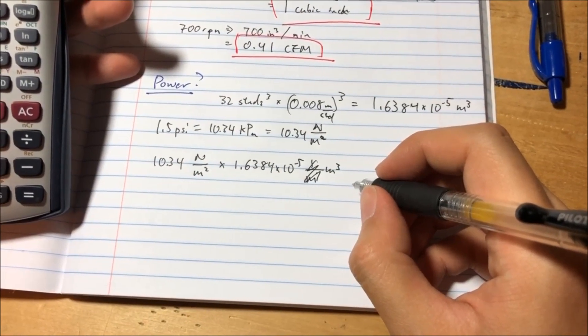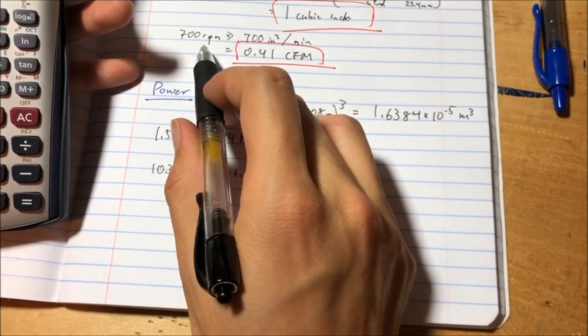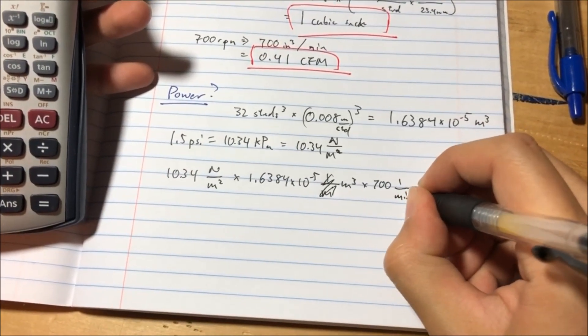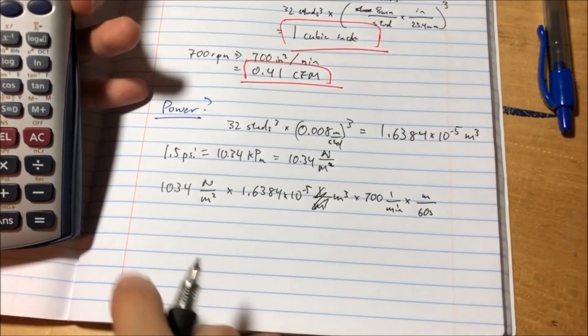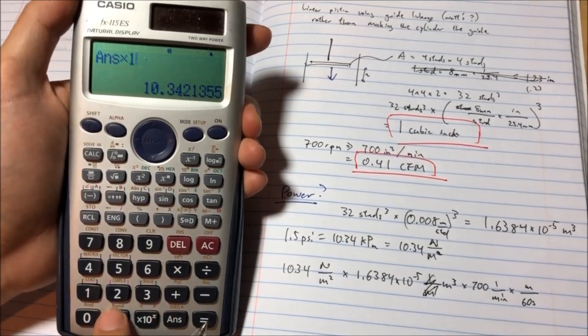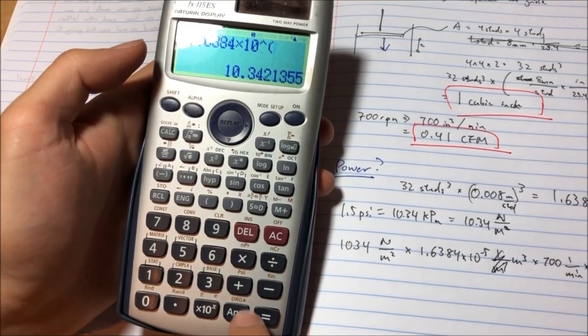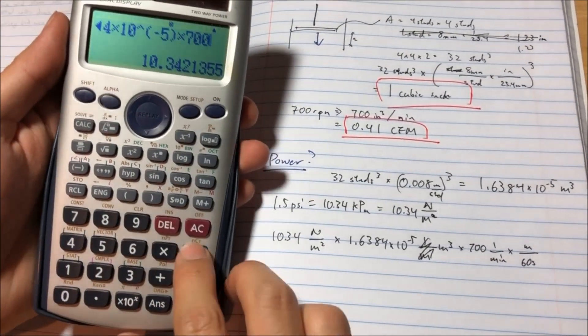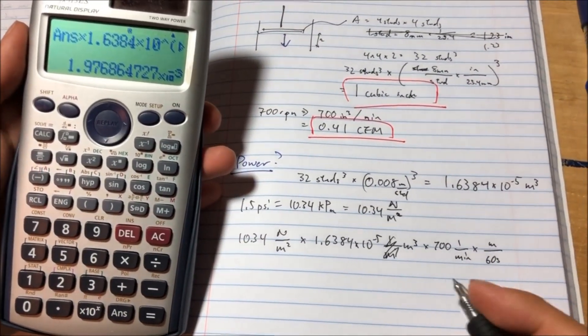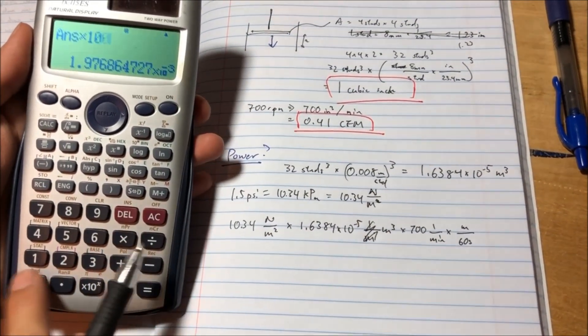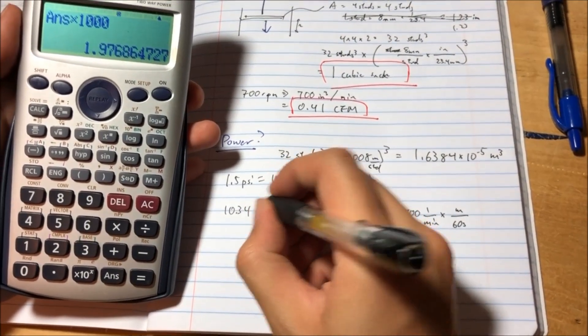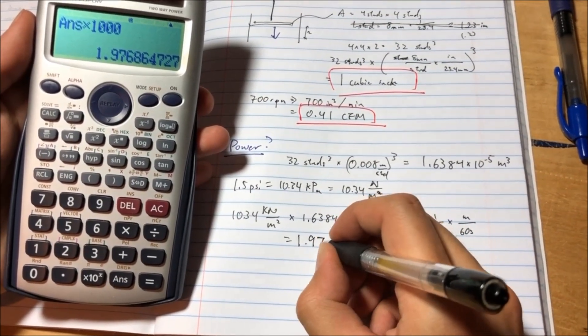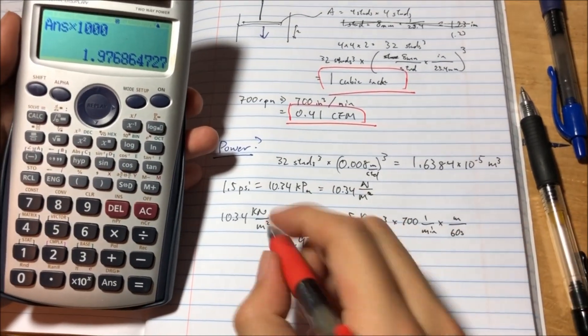And then we need to get a power out of that. So, we have 700 RPMs. So, revolutions per minute, times 700 per minute, times a minute over 60 seconds. So, let's see what that is. So, that times 1.6384, negative 5, times 700, divided by 60. Hmm, that doesn't seem right, for some reason. Oh, that's kilopascals, so we need to go to the thousand. So, kilonewtons right there. So, that's 1.97 watts is the total power from this.